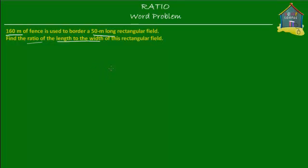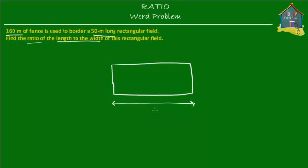What's given is a rectangular field that is being bordered by a fence, and this rectangular field is 50 meters long. So if this is the rectangular field being bordered by a fence, then this side is equal to 50 meters — that is the length of the rectangular field. What we have to find out is the ratio of the length to the width. We don't know the width yet, so we're going to put a question mark here.